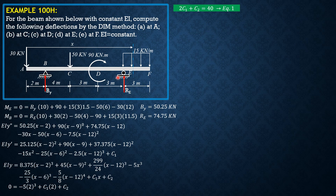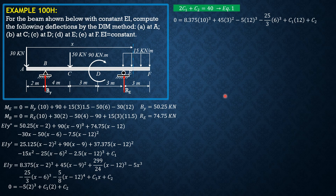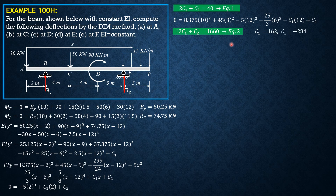When X equals 2 plus 4 plus 3 plus 3 equals 12, Y equals 0. So: 0 equals 8.375(10) cubed plus 45(3) squared plus 0 minus 5(12) cubed minus (25/3)(6) cubed plus 0 plus C sub 1 times 12 plus C sub 2. Establishing the second equation: 12C sub 1 plus C sub 2 equals negative 45 times 3 squared minus 8.375 times 10 cubed, which equals 1660. Solving equations 1 and 2 simultaneously, C sub 1 equals 162 and C sub 2 equals negative 284.